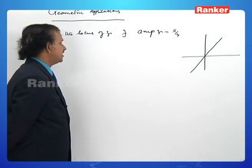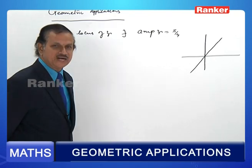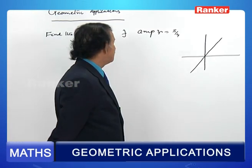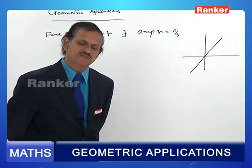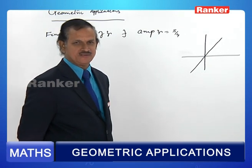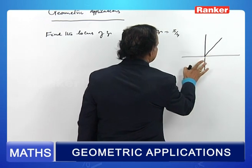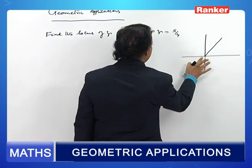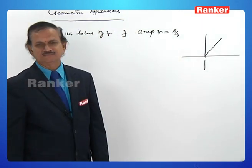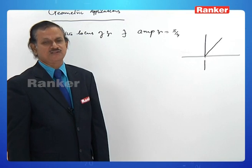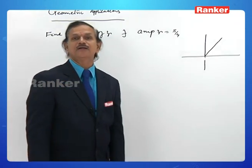If we find the locus of z such that amplitude of z equals π/4 in the positive region only, then the locus is a ray starting from the origin and extending into the first quadrant, since both x and y are positive there.